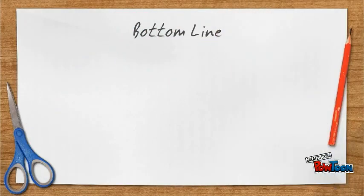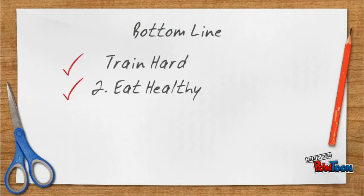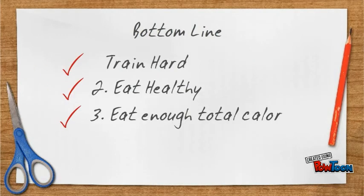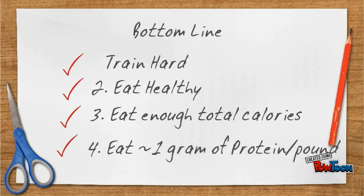So the bottom line when it comes to getting fit and building muscle is that you one, need to train hard. Two, eat healthy. And three, eat enough total calories to build muscle. And then finally, eat about a gram of protein per pound of body weight to optimize your ability to build muscle.